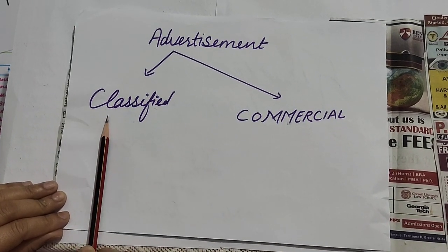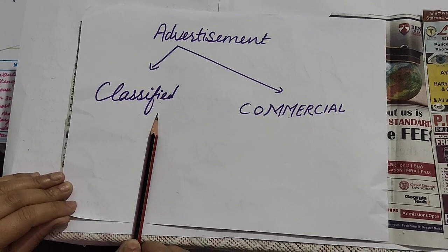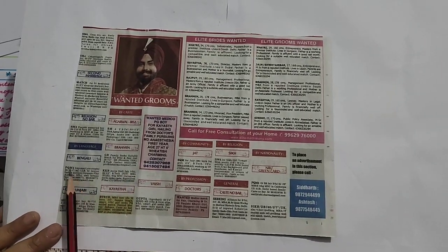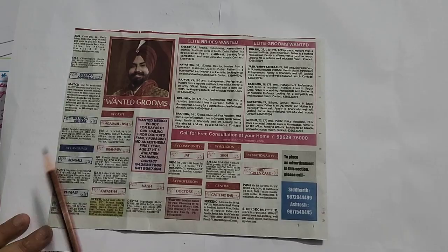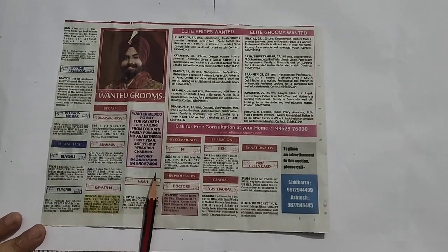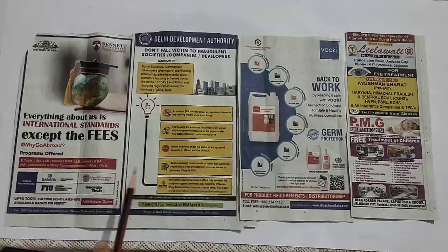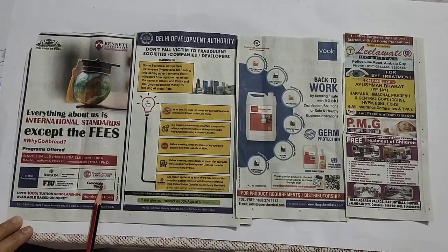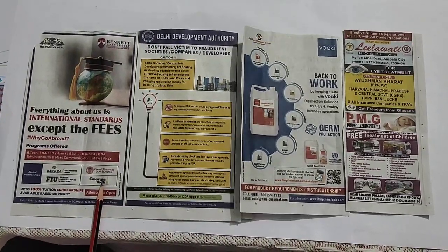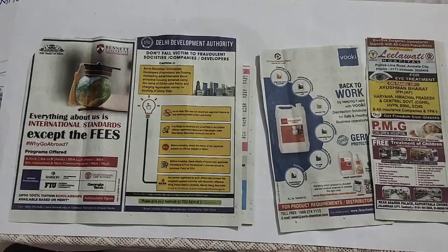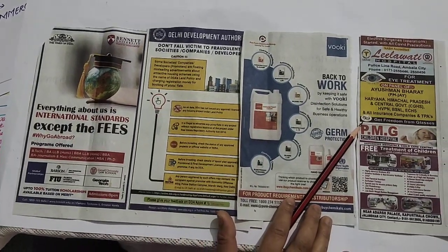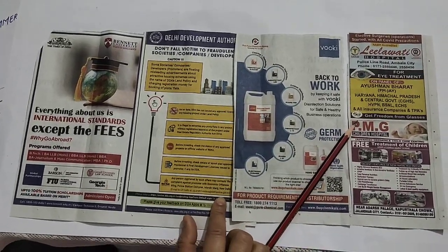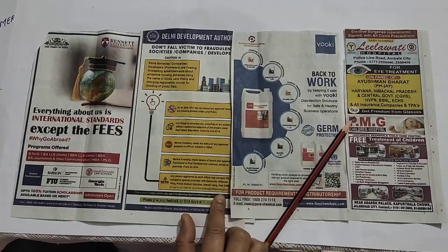Today we are going to do the classified one. Let's see where classified advertisements are used. I hope you must have seen such type of advertisements in the newspaper — these are called classified advertisements. The second kind is commercial advertisement. Commercial or display advertisement is also one of the names for this type.